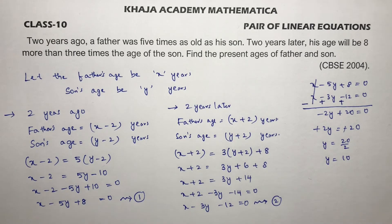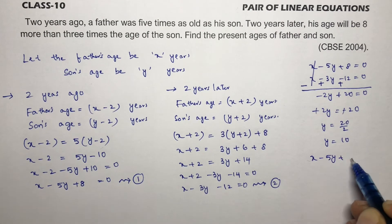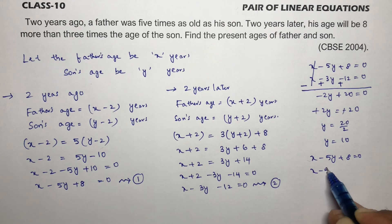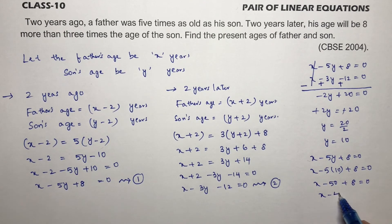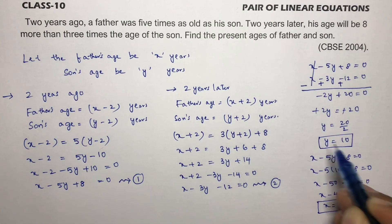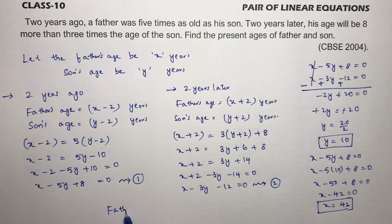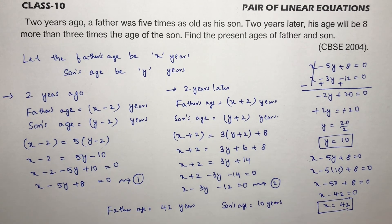Now substitute y equals ten into equation one: x minus five y plus eight equals zero gives x minus fifty plus eight equals zero, so x minus forty-two equals zero, meaning x equals forty-two. So the father's age is forty-two years and the son's age is ten years.